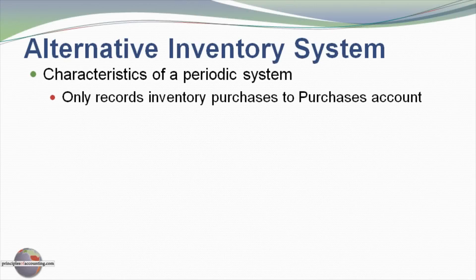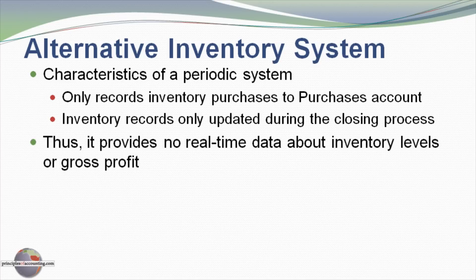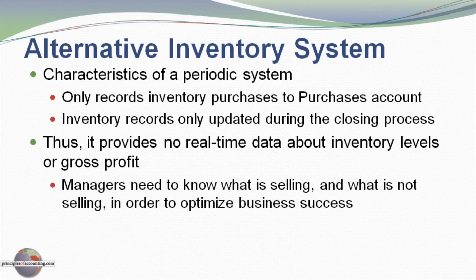Let's look at the characteristics of a periodic system once again. We only record inventory purchases to a purchases account. The inventory records are only updated during the closing process. It provides no real-time data about inventory levels or gross profit. Managers need to know what goods are selling, what is not selling, and are able to optimize their business processes. A periodic system is very deficient in providing that information.